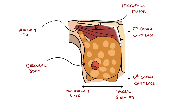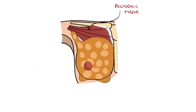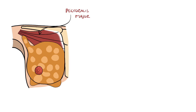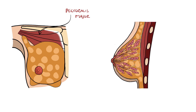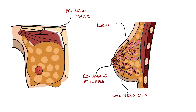The breast is the location of the mammary glands, which are modified sweat glands with the primary function of lactation — the process of producing milk. The glands have a series of ducts and lobules, with each lobule consisting of alveoli that are drained by a lactiferous duct. These ducts then converge at the nipple. Surrounding the mammary glands is connective stromal tissue, including suspensory ligaments.